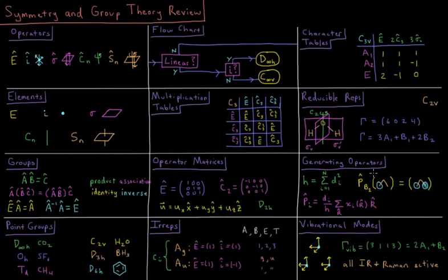Once we have those, we can also use what are called generating operators to generate orbitals from our individual atomic orbitals, which are molecular orbitals that are compliant with the symmetry properties of the given group.